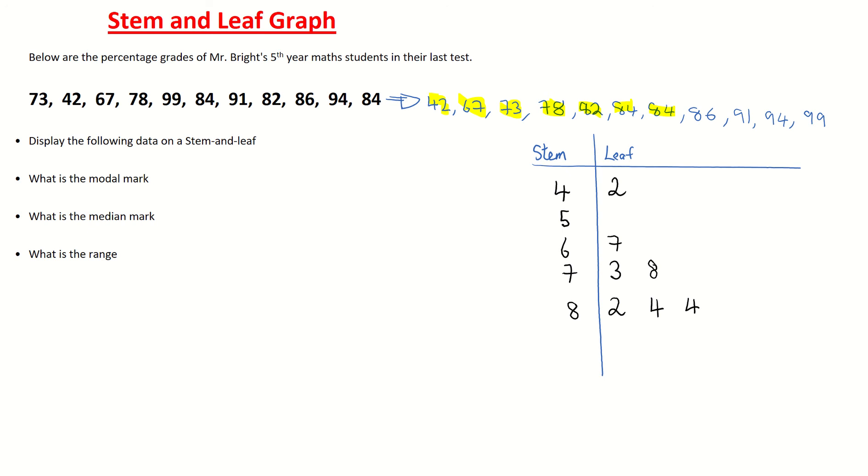And hopefully you can see now that's the reason we put these in order at the start, because your stem and leaf has to start from the smallest number to the largest. Then I'm putting in this 86, and that is me finished with the 80s.